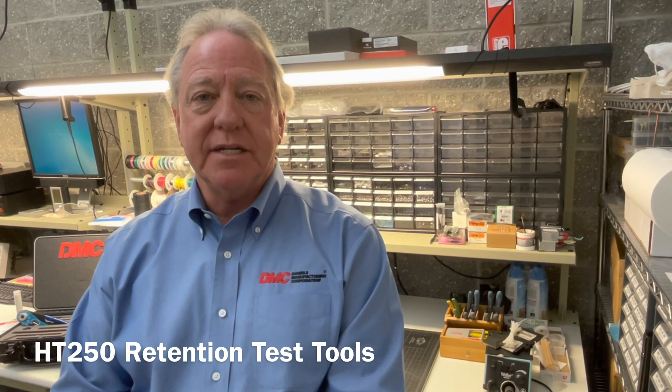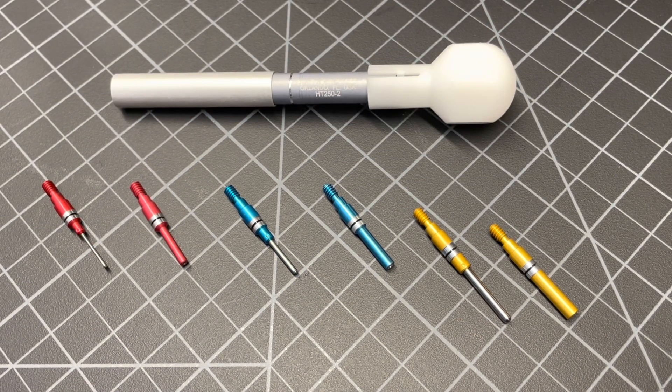This is a video on how to use the contact retention tools from Daniels Manufacturing. These tools are used to check the retention of pin and sockets in an electrical connector by indicating when the proper pressure has been applied.